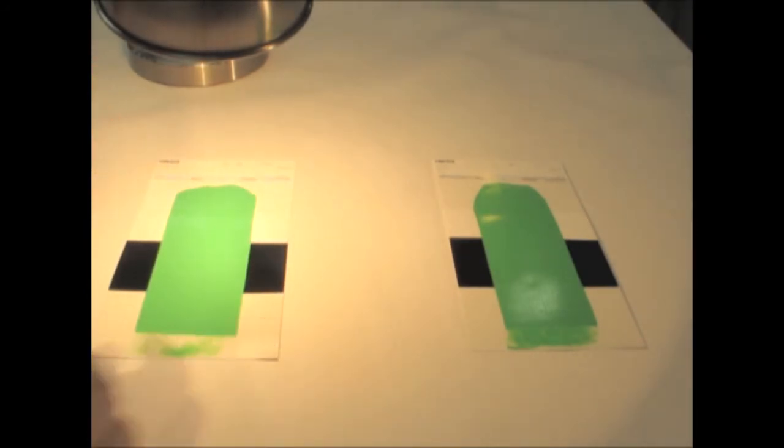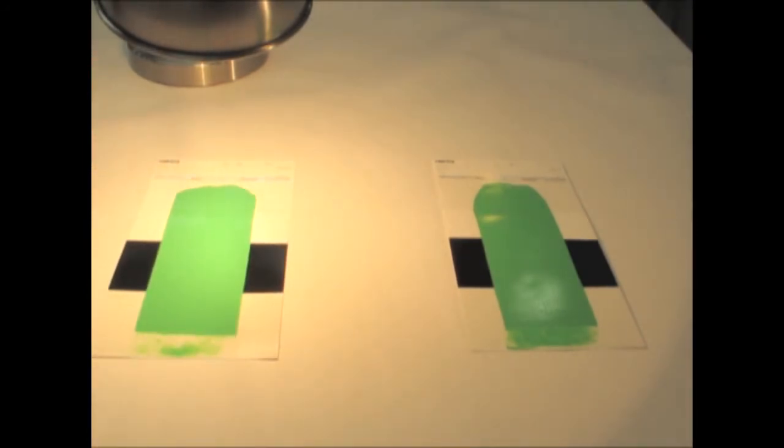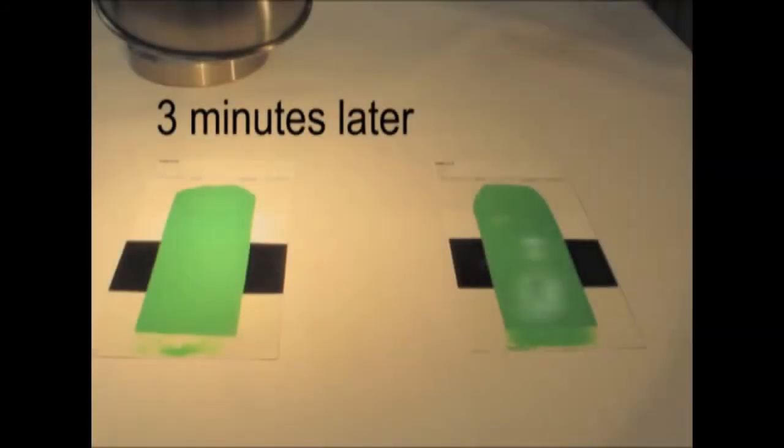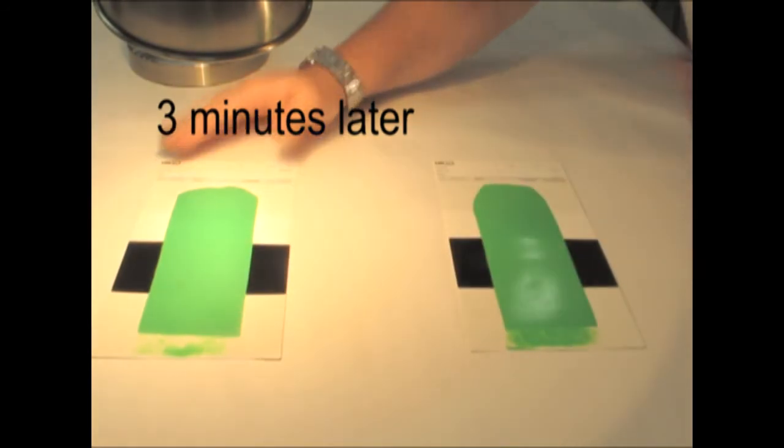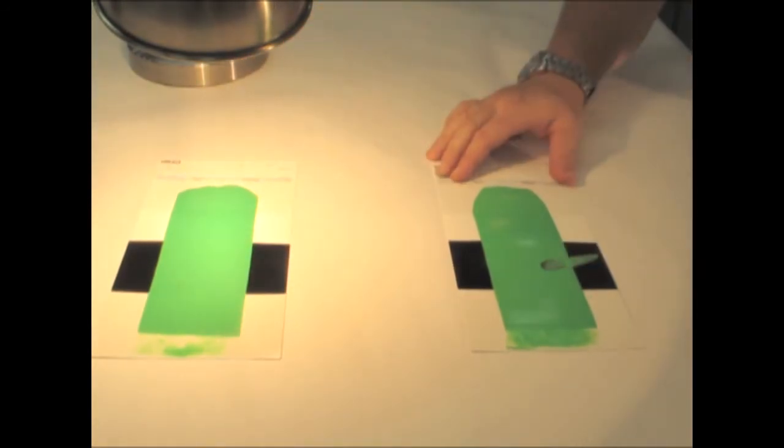And finally, we look at the effect of temperature. A thin drawdown of light green blue shade is applied onto lacquer test cards, with one of them directly placed under a heat lamp. Three minutes later, the card underneath the heat lamp is already dry, whereas the card out of the direct heat path is still wet.